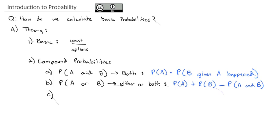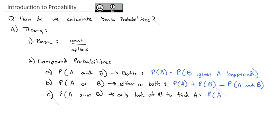The third type of probability was kind of implied in the formula for the and — and that is the given. The probability of A given B means that B has occurred; we know B is true, so we're only going to look within B to find A. We can calculate it as the probability of both A and B divided by the probability of the given information. So if B was given, B goes in the denominator.